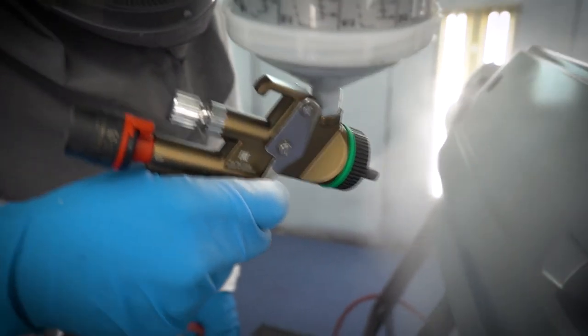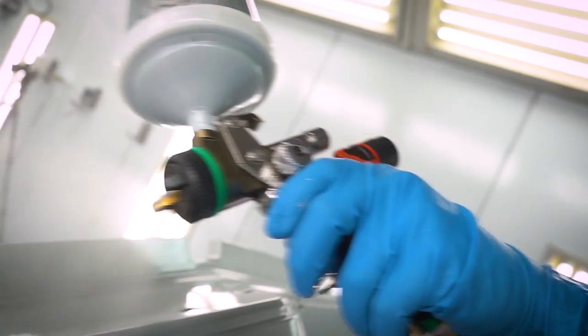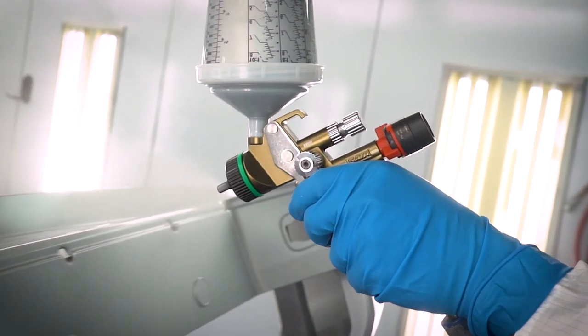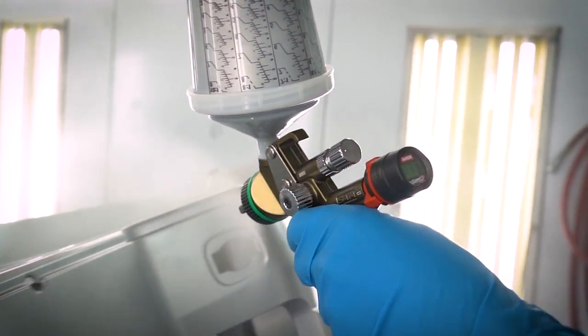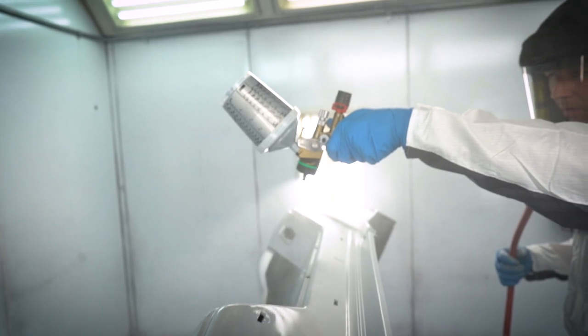Again, HVLP will give you a real high transfer efficiency, less overspray, great color control, which is what most people use HVLP for, is for their color because you're not blowing metallics all the way down the panel, doing small blends, repair work. You can keep that overspray to a minimum. We're seeing more people start to use these again and they get very good results.